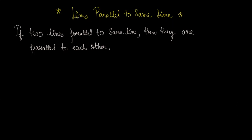Lines parallel to the same line — this is a theorem. First, read it and understand it: if two lines are parallel to the same line, then they are parallel to each other.